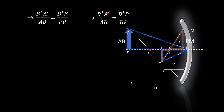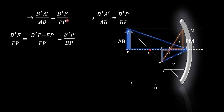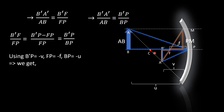The left-hand side terms are the same, so we equate the right-hand side terms. We express BF in terms of the distances. Applying the sign convention, BF is nothing but minus v minus f, where v and f carry their respective signs.